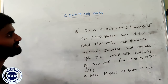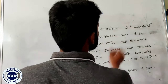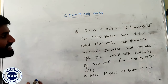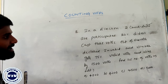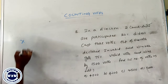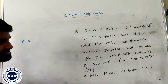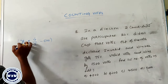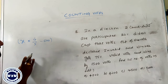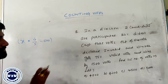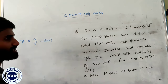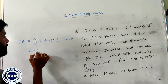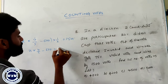In an election, two candidates are participating. 20 percentage did not cast their votes. Out of those who voted, 600 votes declared invalid, winner gets 75 percentage of valid votes, and he wins by 1500 votes. X is the number of votes. 20 percentage did not cast their vote means 80 percentage cast their votes, so the value becomes 4 by 5. Out of these votes, 600 votes declared invalid, so we subtract it. These votes are distributed between winner and loser. Winner gets 75 percentage, loser gets 25 percentage, and winner wins by 50 percentage. 50 percentage becomes 1 by 2 and equals 1500. So x into 4 by 5 minus 600 equals 3000.